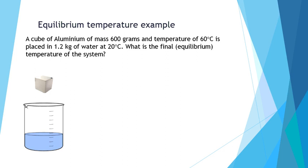In this instructional video we'll be looking at equilibrium temperature. The example we have here is a cube of aluminum of mass 600 grams and temperature of 60 degrees Celsius, placed in 1.2 kilograms of water at 20 degrees Celsius. We're asked to find or calculate the final equilibrium temperature of the system.